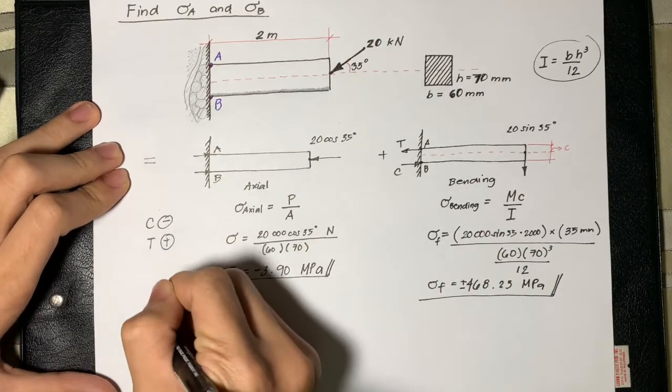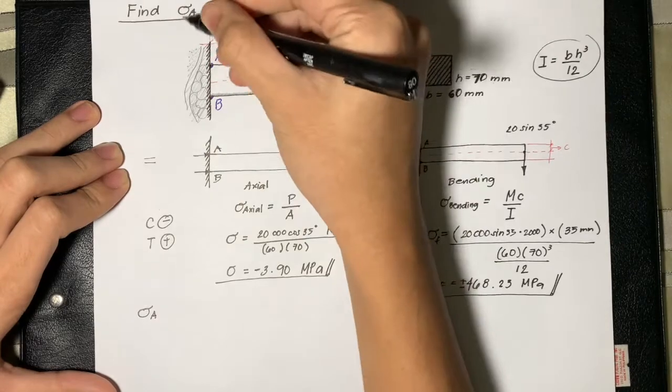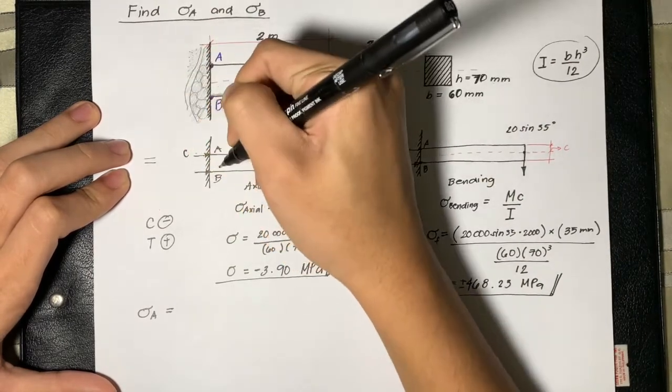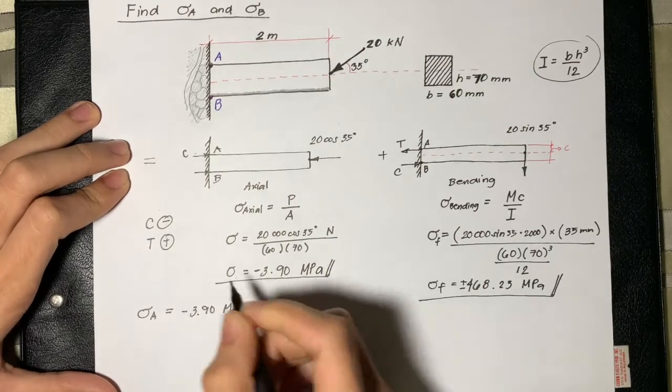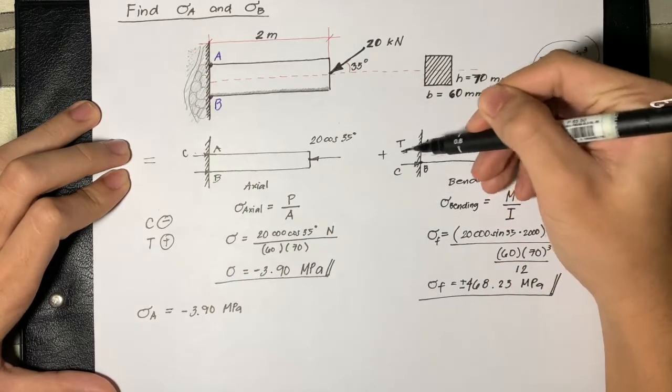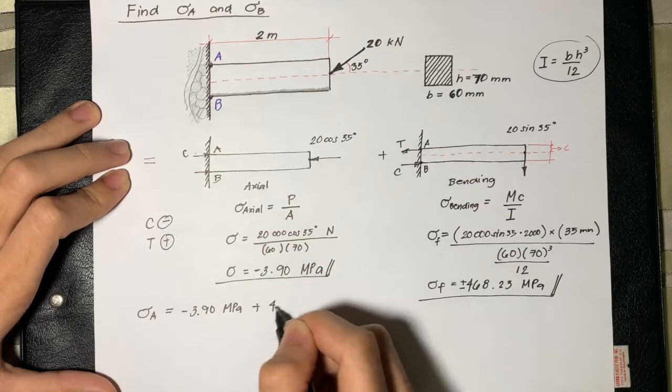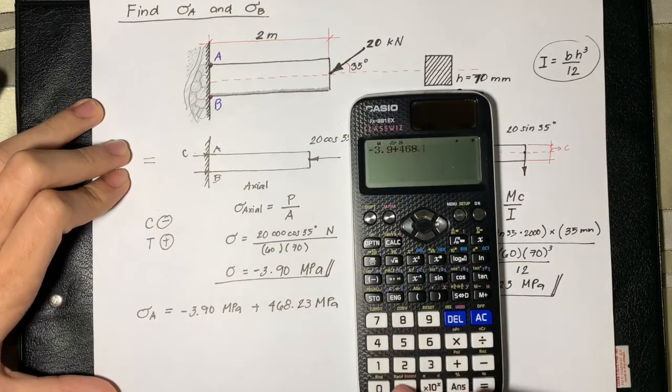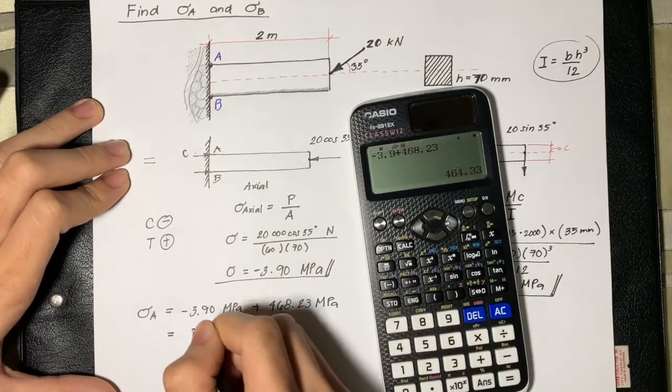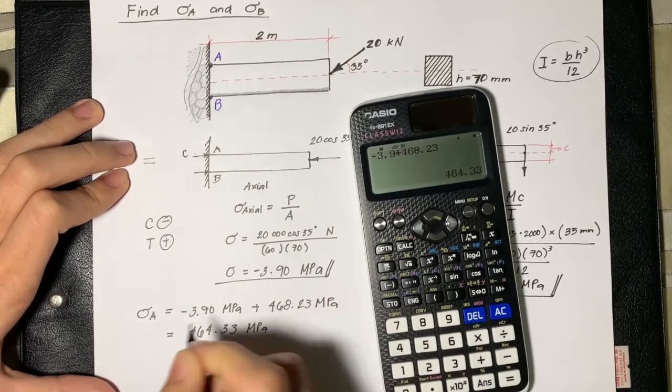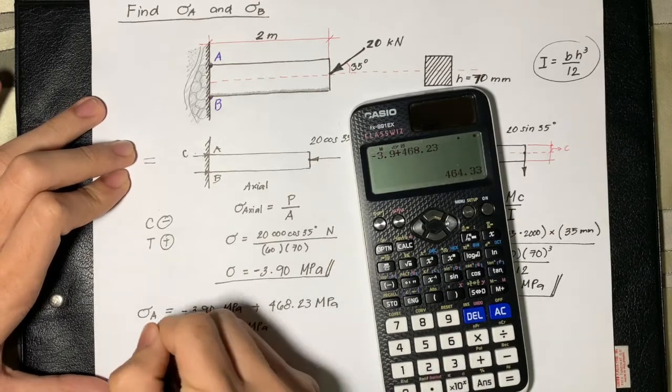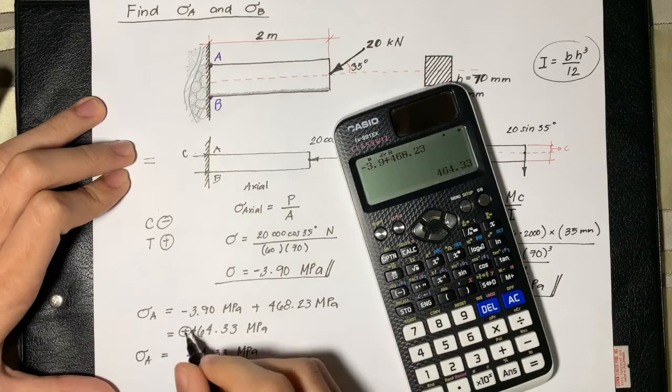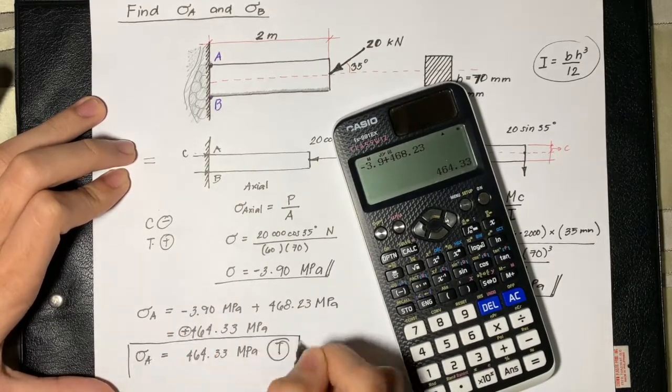Now we will proceed in solving the stress at A and B since we already gathered all the information we need. For the stress at A, we have negative 3.9 MPa plus the tensile stress, positive 468.23 MPa. Using the calculator, we get 464.33 MPa. This is the stress at point A. Since it is positive, we know this is a tensile stress.